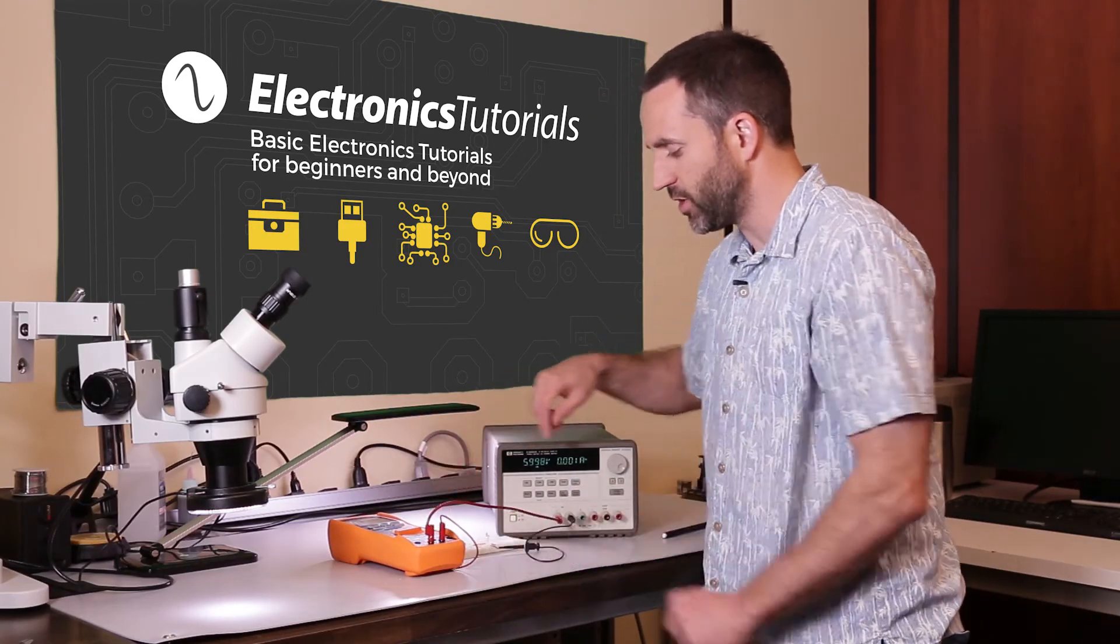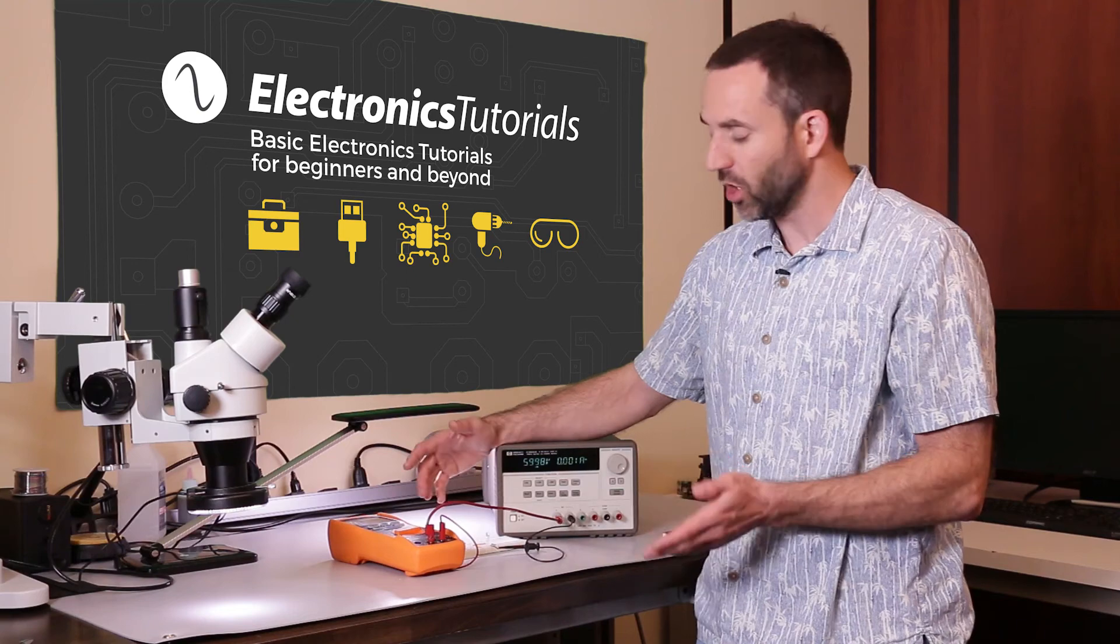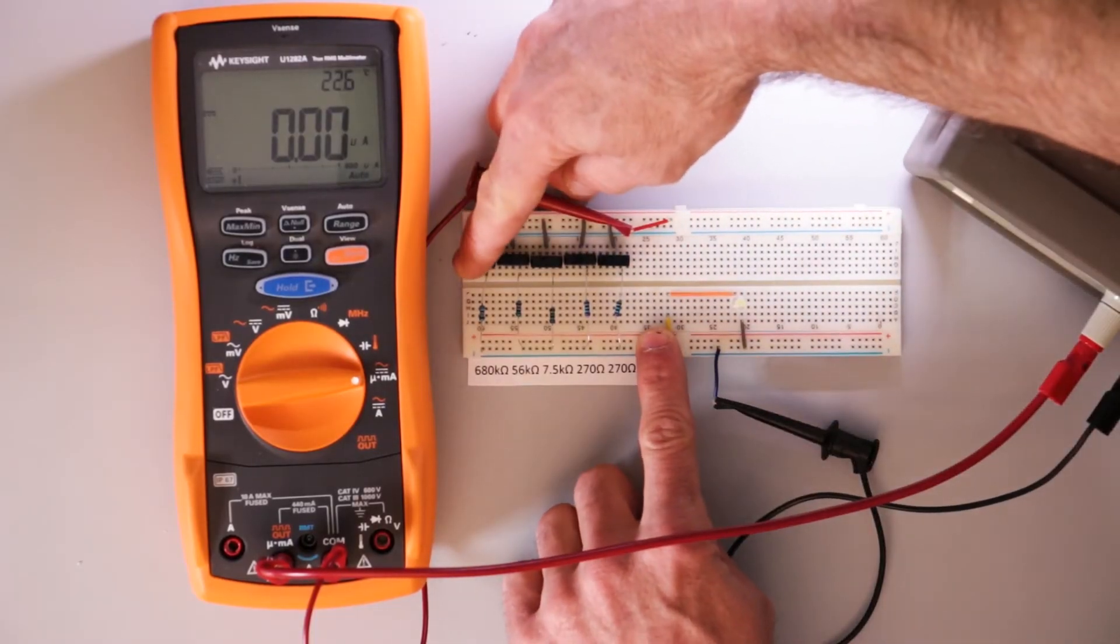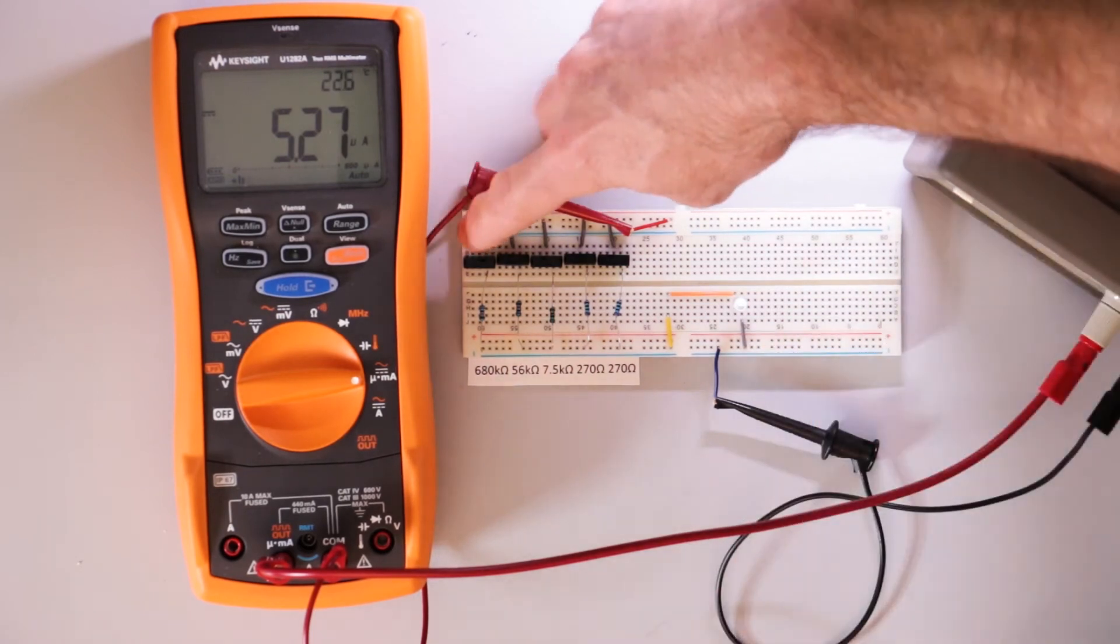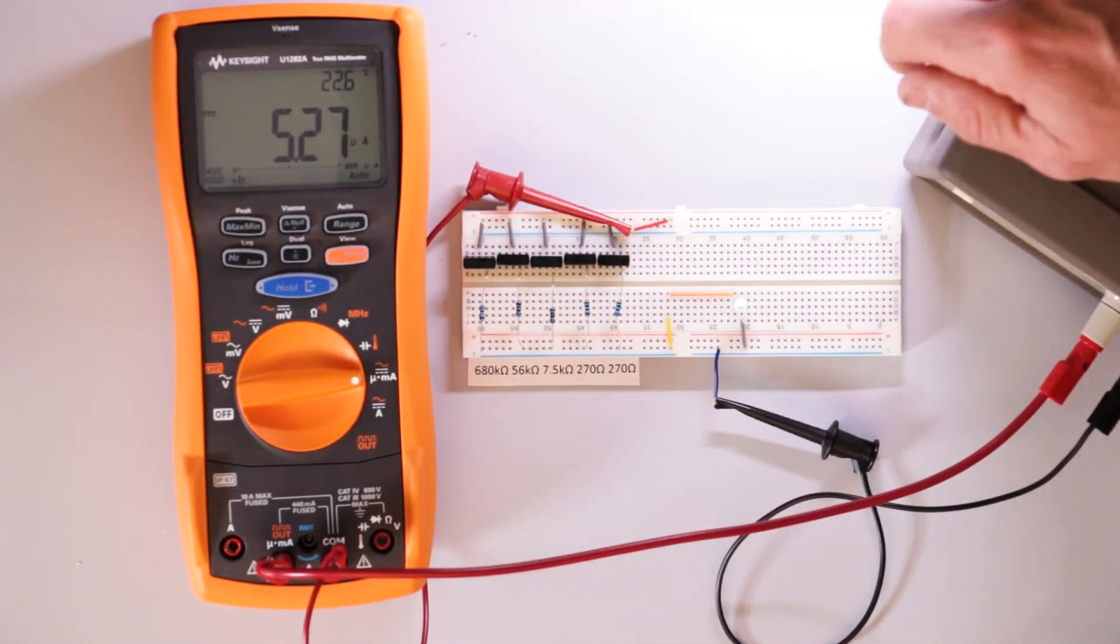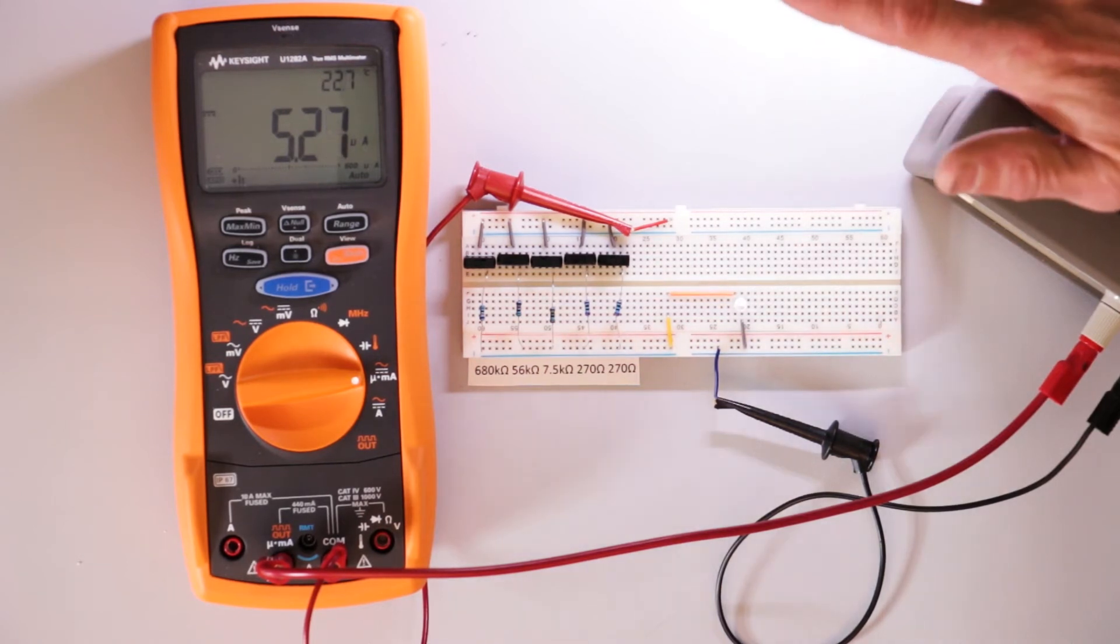So I'll turn on the first resistor, 680 kilohms. A little bit of current is coming through, really high resistance. You'll see just a little bit of the LED. The LED is just barely turned on. You can see 5.27 microamps. So not very much current.